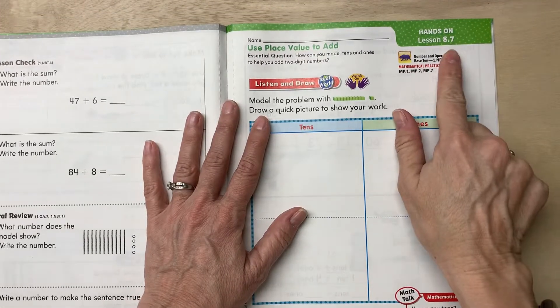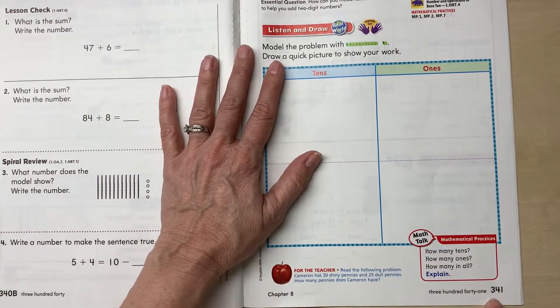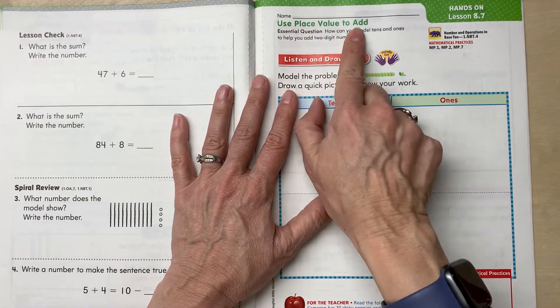Okay, we are now doing lesson 8.7 on page 341. It's called Use Place Value to Add.